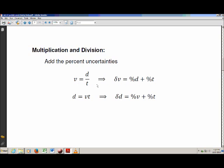So the rule for multiplication and division is always the same. It's that you're going to add up the percent uncertainties. So it doesn't matter whether you're dividing or multiplying. In both cases, you still add the percent uncertainties. So if D has a percent uncertainty of percent D, and T has an uncertainty of percent T, you just add those up, and that's the percent uncertainty on V.